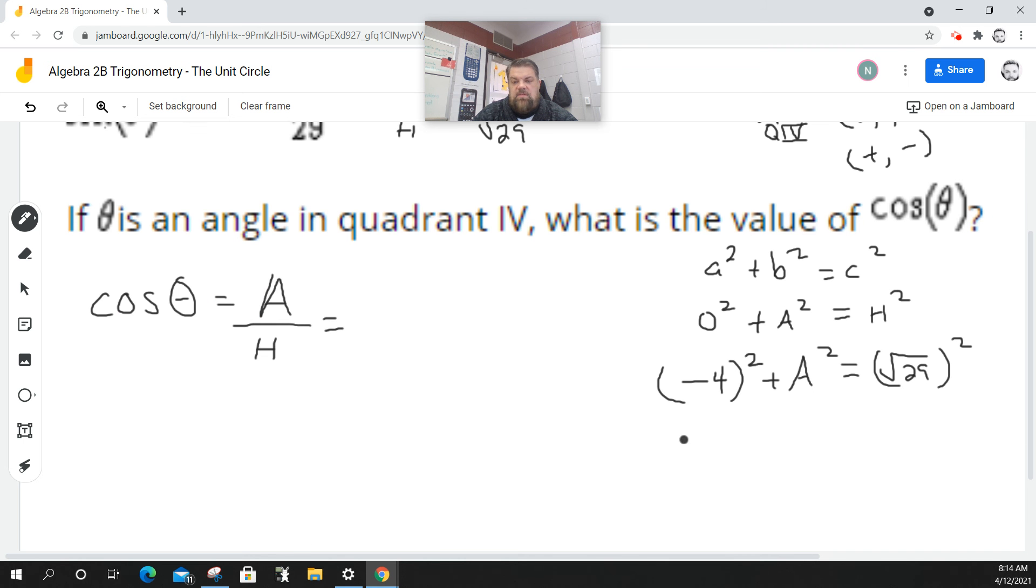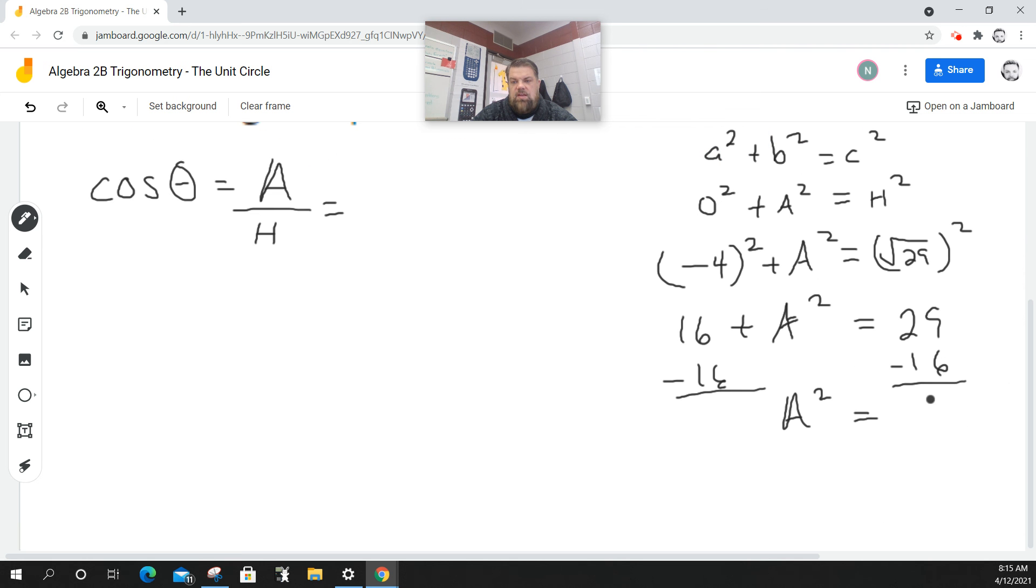So when I do some math here, I get 16 plus a squared is equal to the square root of a square is the base, which is 29. We're going to subtract 16 from both sides. And I get a squared is equal to 13. Take the square root of both sides. And I'm going to say a is equal to the square root of 13.